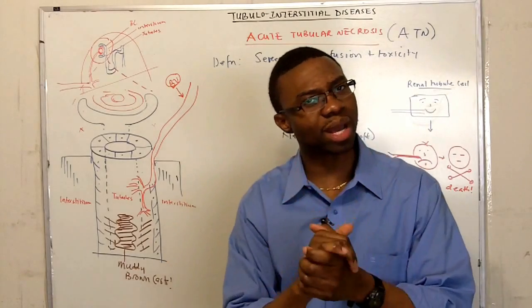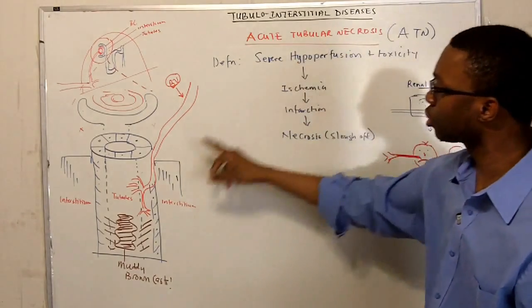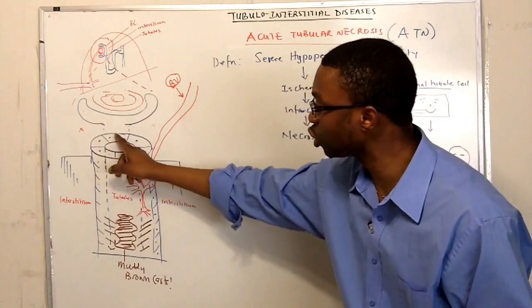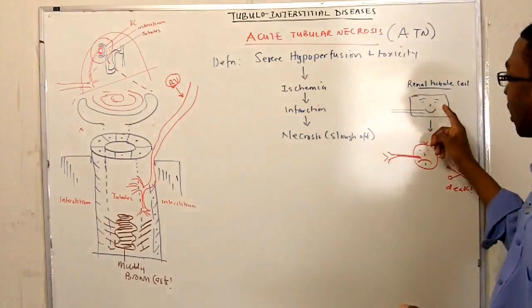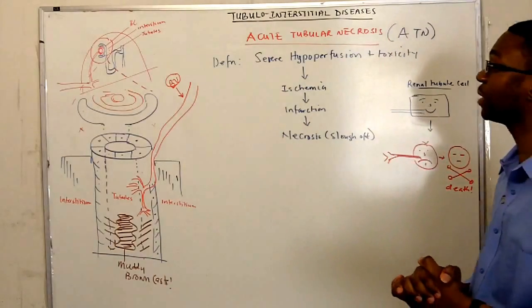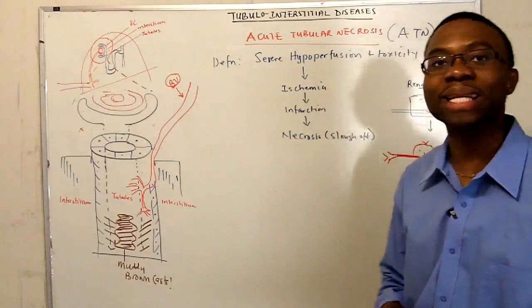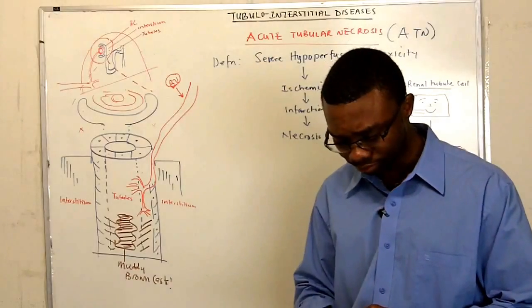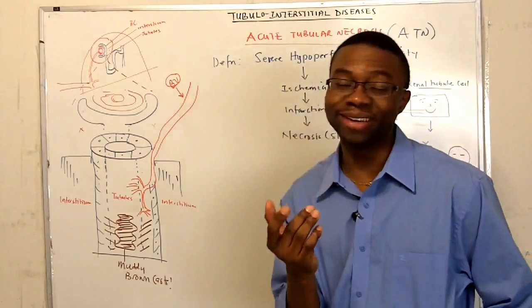Acute, a very short amount of time. And tubules, here are the tubules. Remember those renal tubule cells I told you about? That's one of them. We're going to talk about them in a minute. But now necrosis means they're dead. They died.